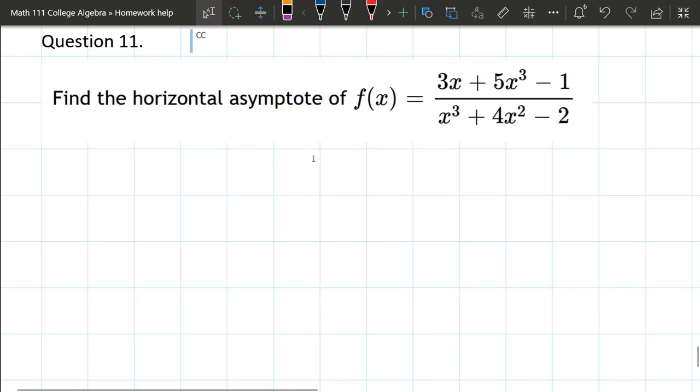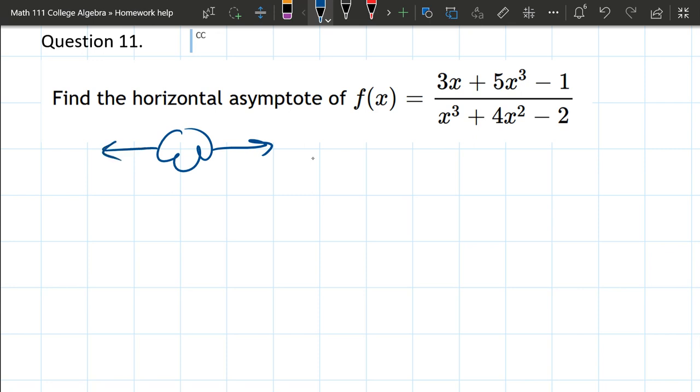So our next question, they already tell us what kind of end behavior is happening. They already say it's going to be a horizontal asymptote. So if we would sketch that end behavior, it's going to be a horizontal line. All we have to do is figure out the y value of the line.